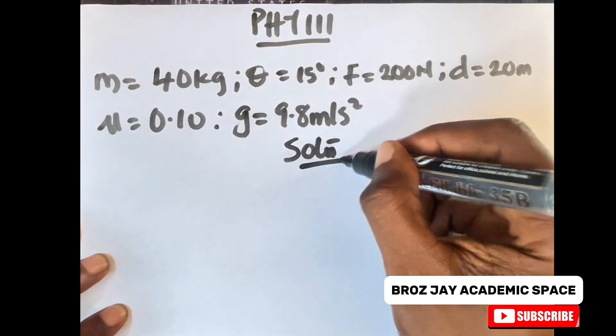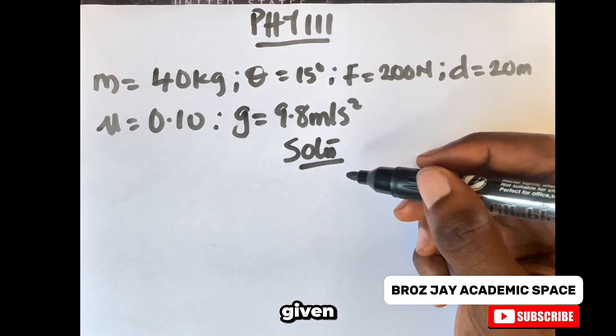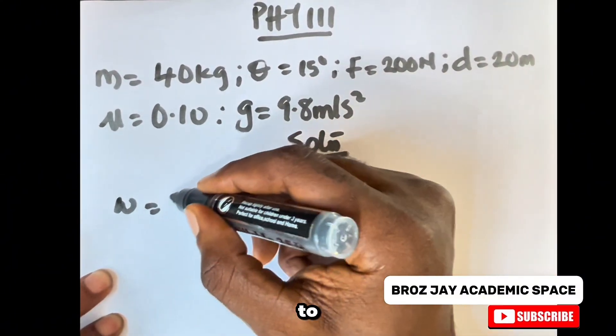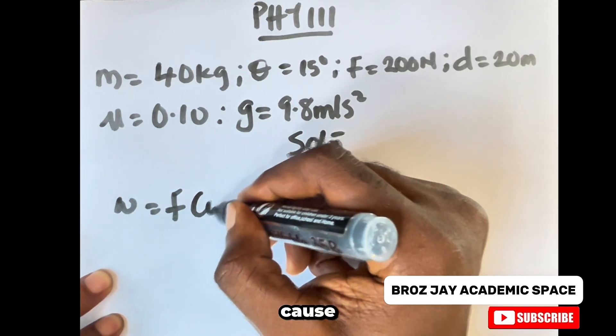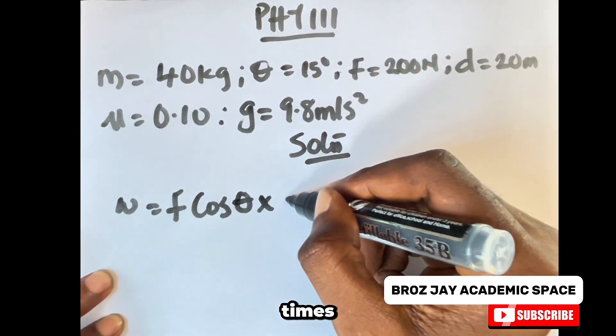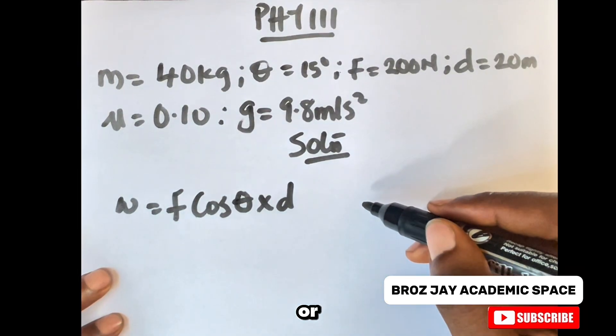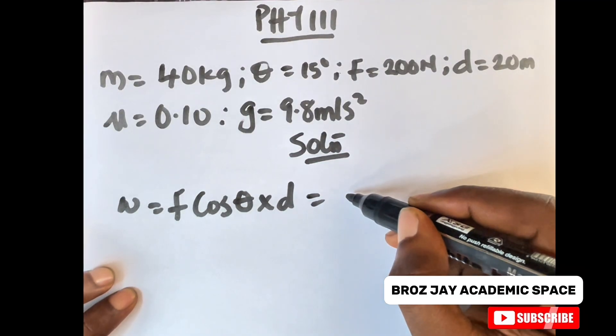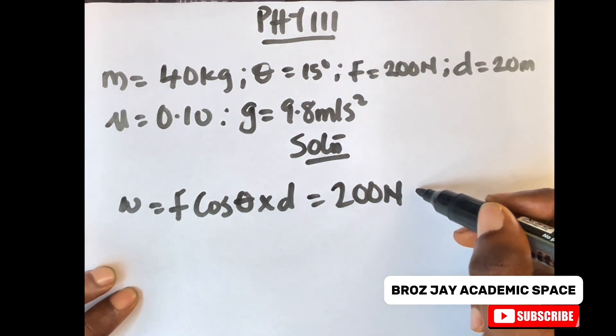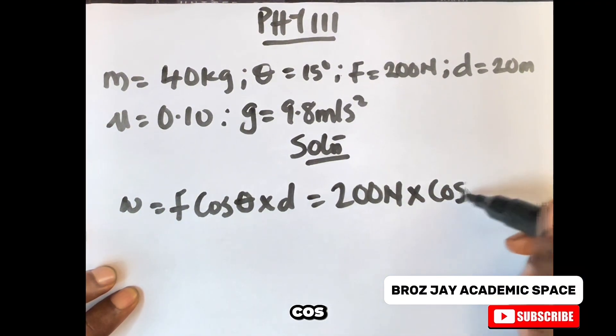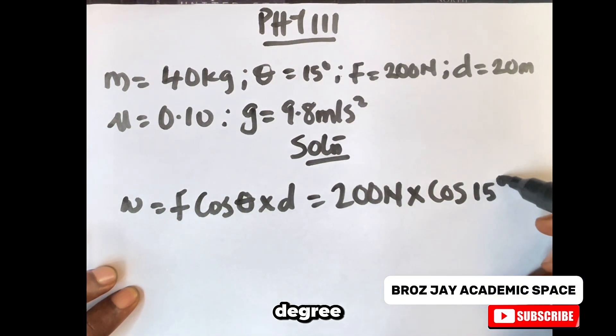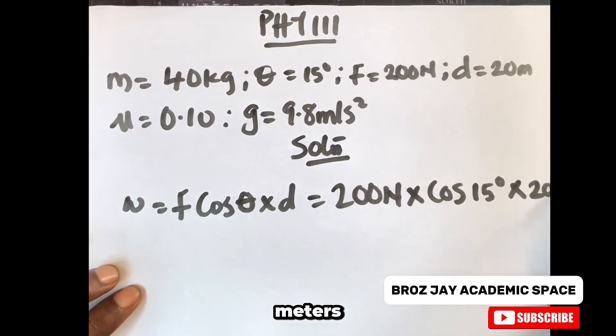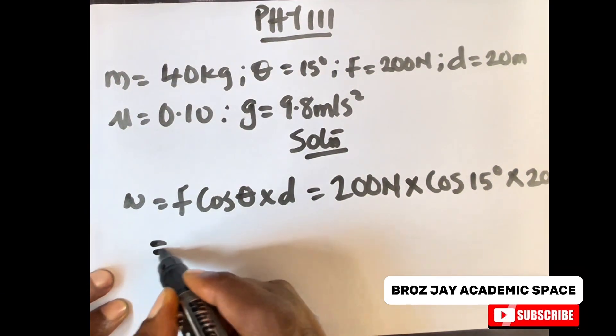Solution. Given this equation, recall that work equals F cos theta times displacement or distance. Listing these parameters we have the force to be 200 N times cos 15 degrees times the distance which was given as 20 meters.